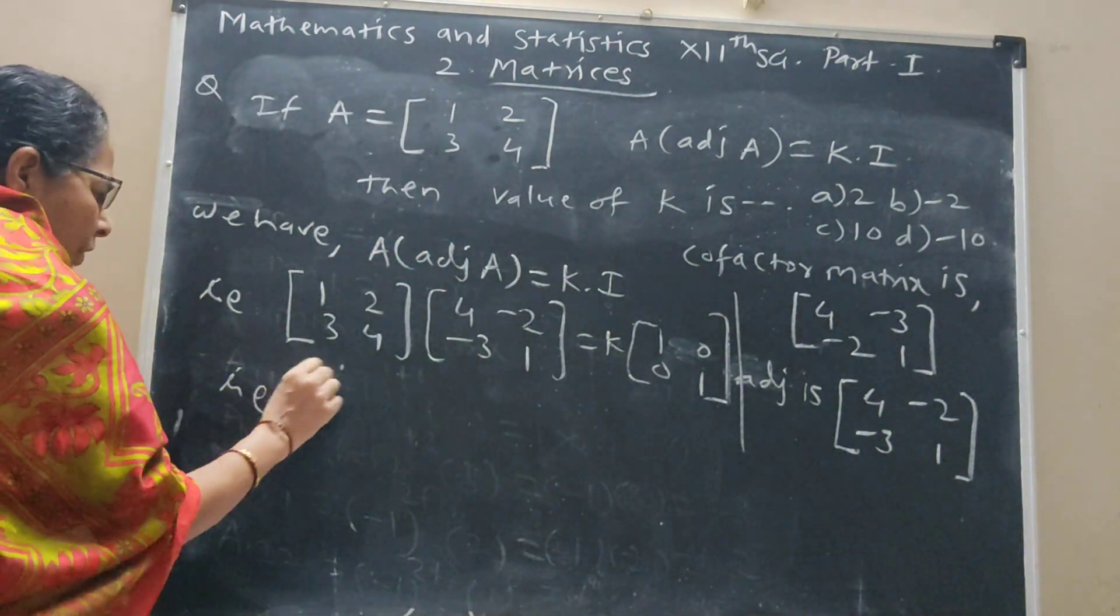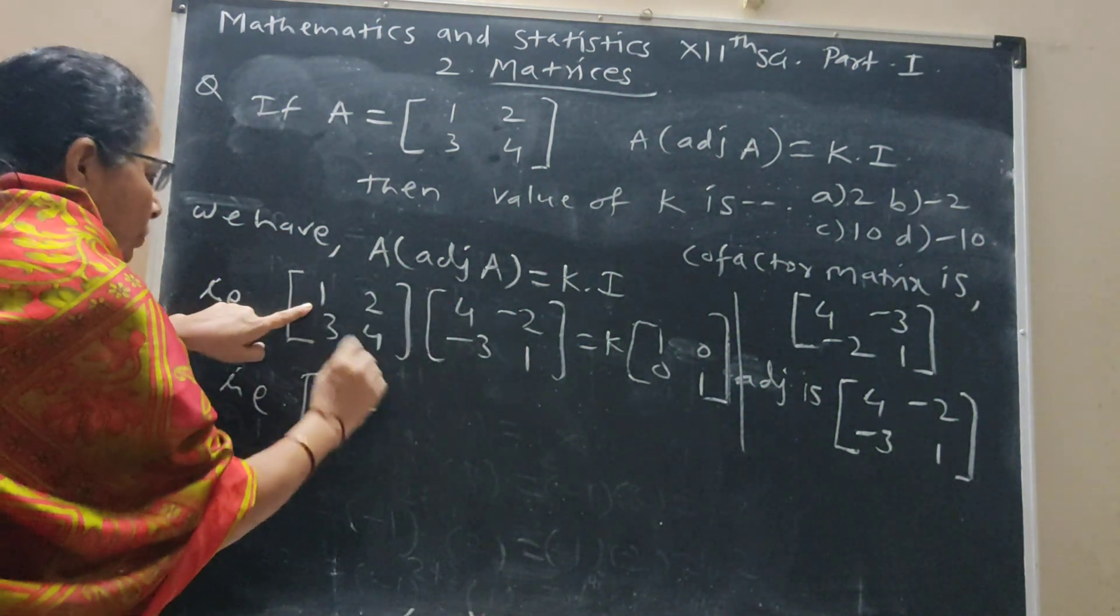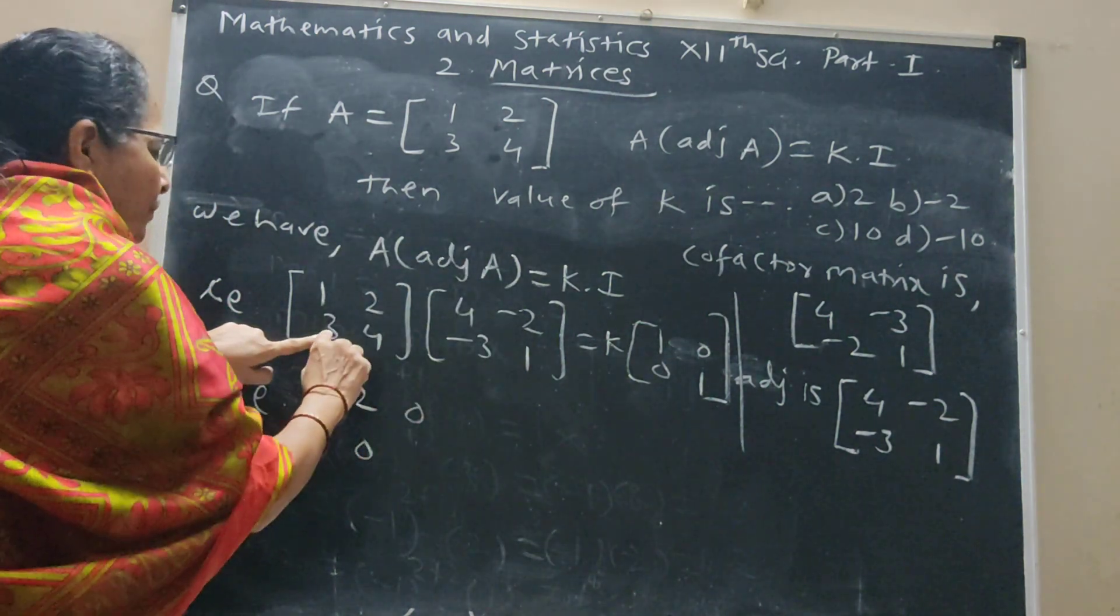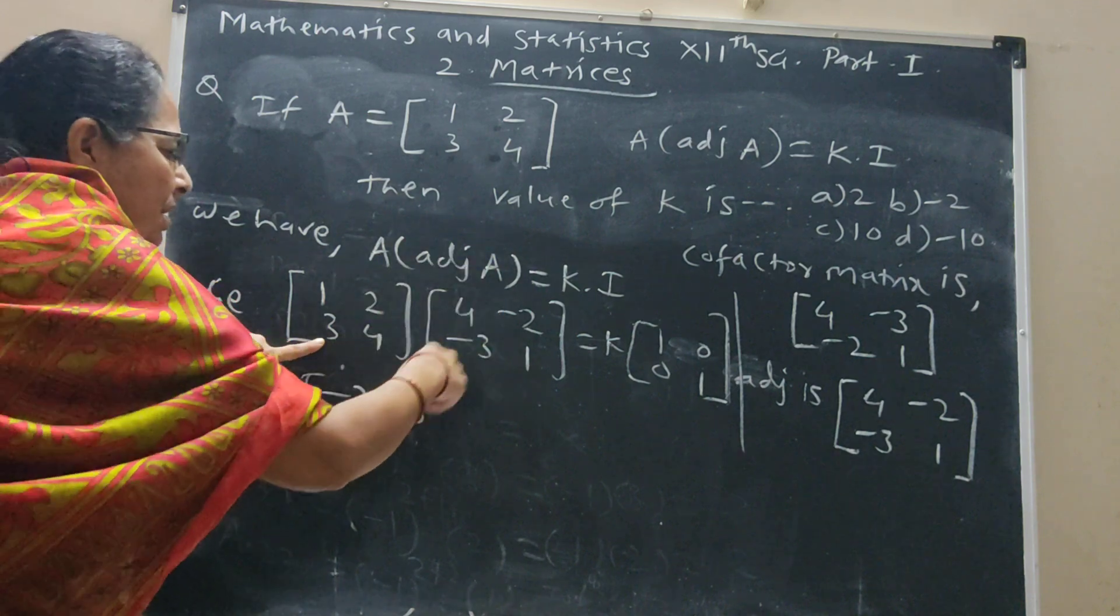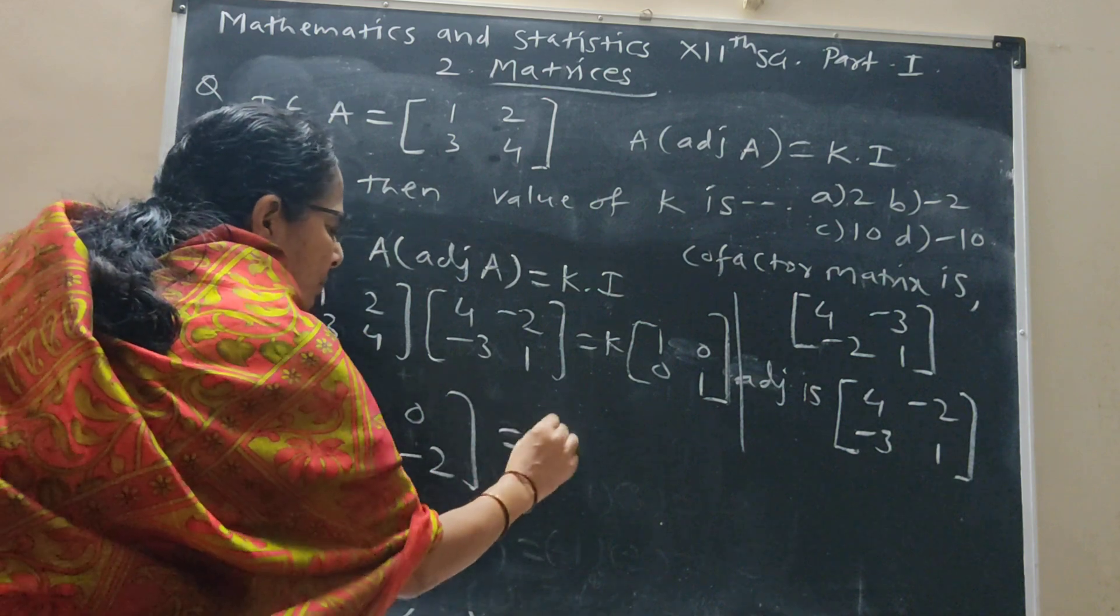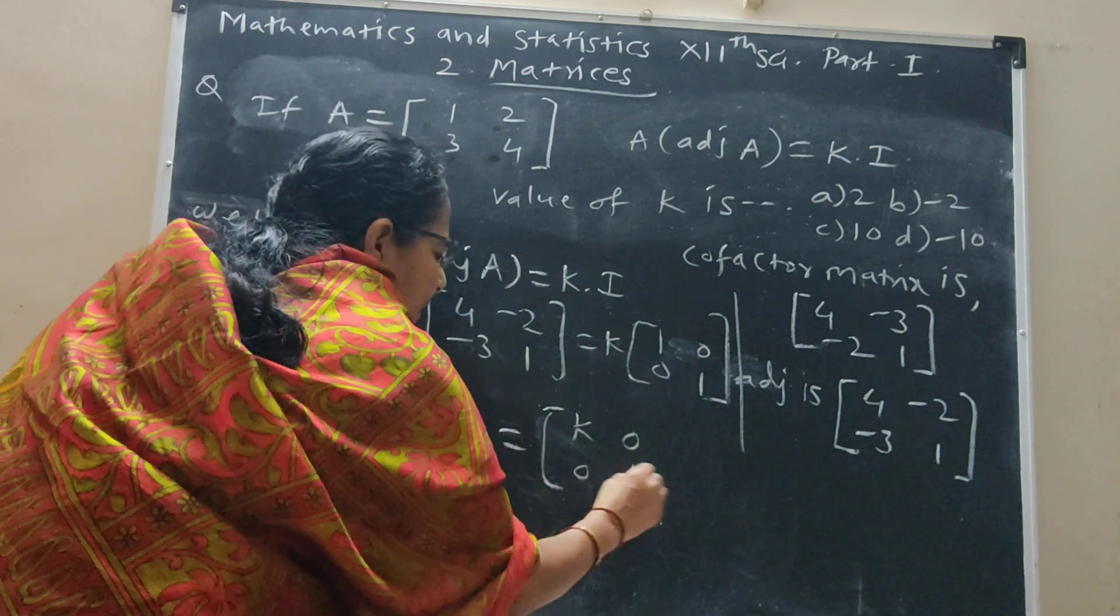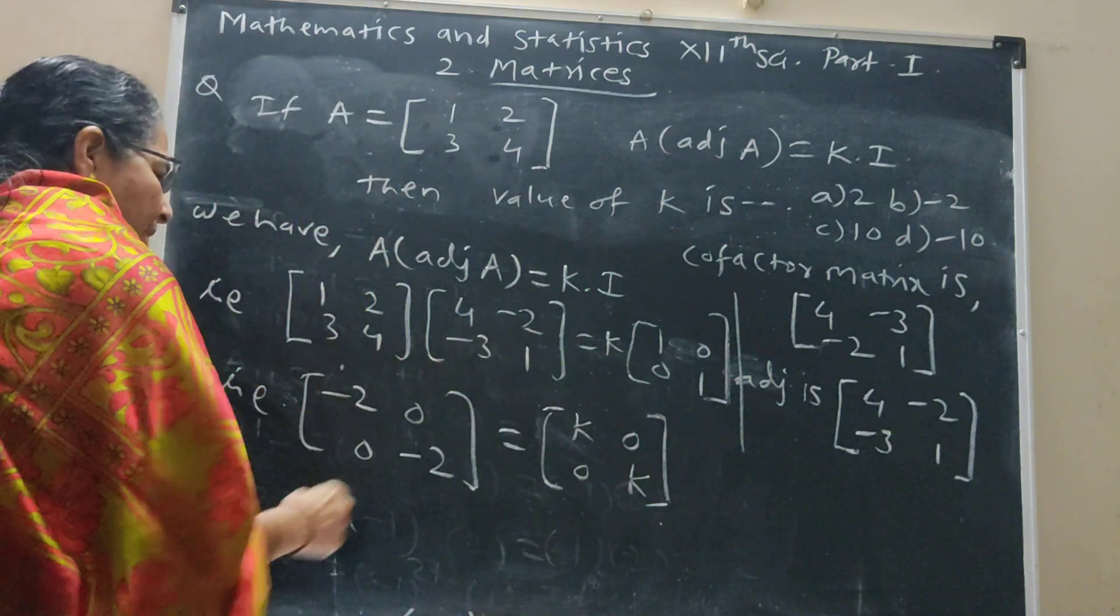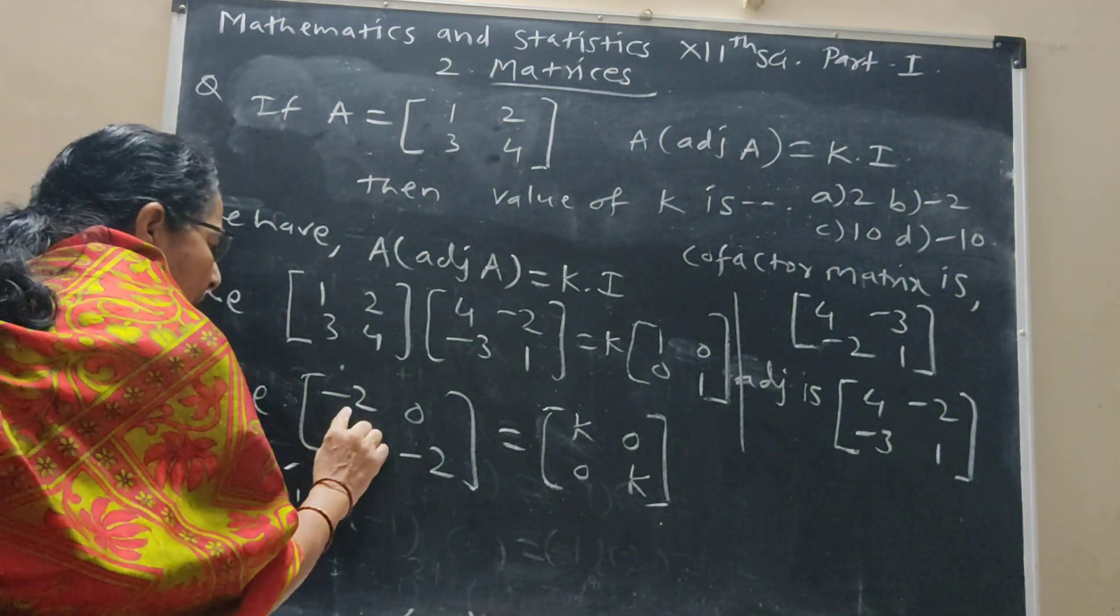Next, we have to take product. This row, this column, product element here: 4 plus -6 is -2. -2 plus 2 is 0. 12 minus 3 is 0. -6 plus 4 is -2. So we get [[-2, 0], [0, -2]]. Multiply inside by k: [[k, 0], [0, k]]. These two matrices are equal, therefore -2 equal to k. Or we say that k equal to -2.